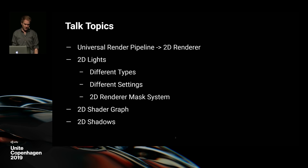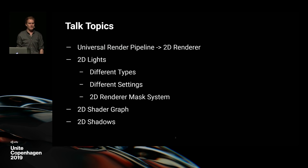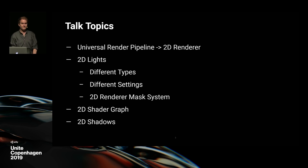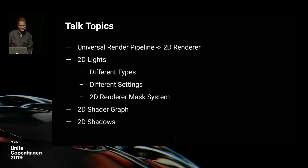Another topic is 2D Shader Graph. If you've used Shader Graph before, or you're aware of shader-based workflows with nodes like Shader Forge — every engine has a shader thing at this point — I'm going to go over specifically the sprite workflow with Unity. It's not that different to using Shader Graph before, just a different way of outputting the shader. And the last thing is 2D shadows, which got in pretty hot, so this is going to be fun to see how this works.